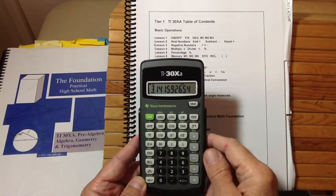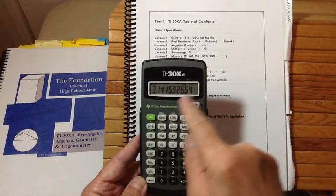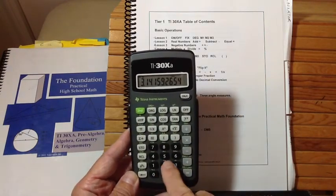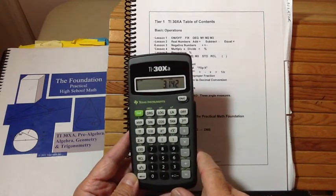And then the first thing we teach them how to do is to fix the number of decimal points. Now, you do that by hitting the second key, hitting the decimal point down here, and then hit, say, three, if you want to see three decimal places.